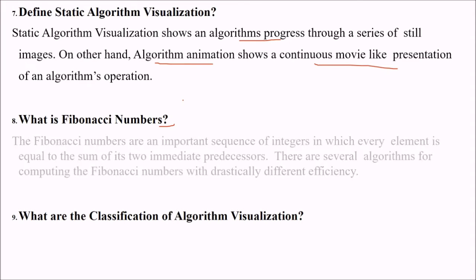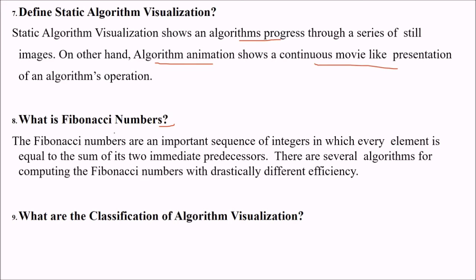What is Fibonacci series? This is also a problem which is generally given to students. If you have two values, say 0 and 1, the next value will be the addition of previous two values. That will be 1, 1 plus 1 is 2, 2 plus 1 is 3, then 3 plus 2 is 5, and so on. Fibonacci numbers are an important sequence of integers in which every element is equal to the sum of its immediate predecessors. There are various algorithms for computing these Fibonacci numbers with various efficiencies to understand the efficiency.